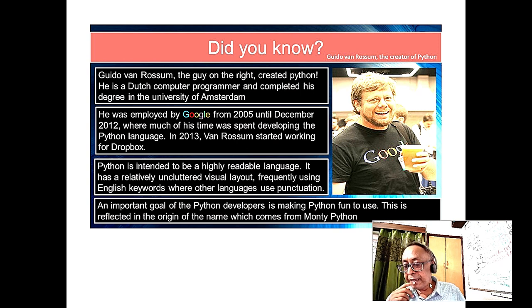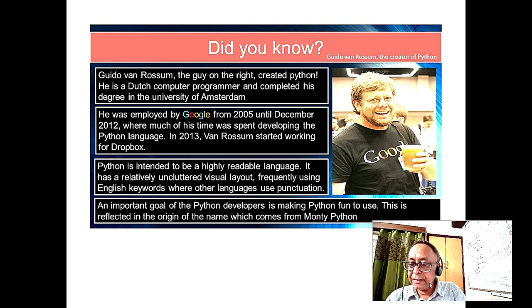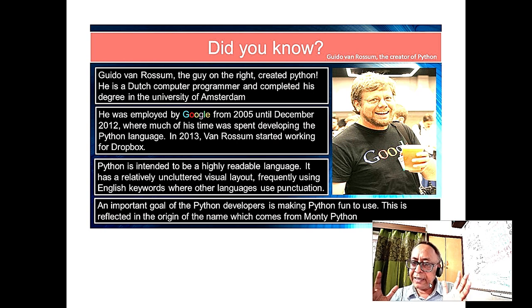The limitation of C and C++ is that it is a host-centric language — it works on only a single host and cannot work on distributed computers. At the time Python was developed, around 1990, the internet was not yet great. Client-server technology had just started coming in.